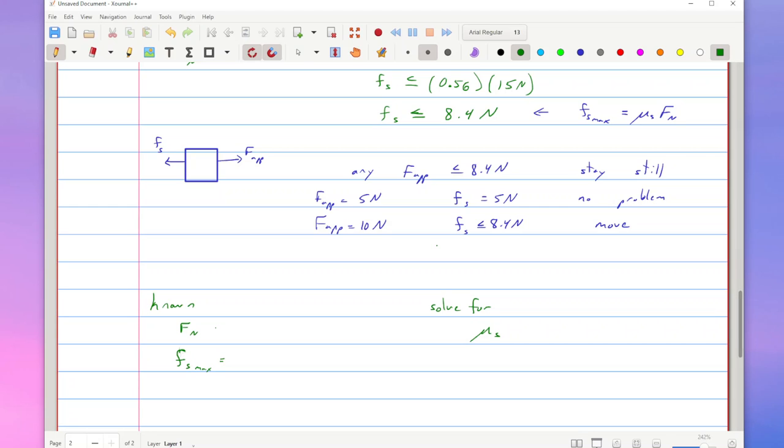But we can only do that if our knowns includes the normal force and the maximum static friction. In other words, how much frictional force can I get before the thing is going to start moving? So just before it starts moving, that gives us our maximum force.